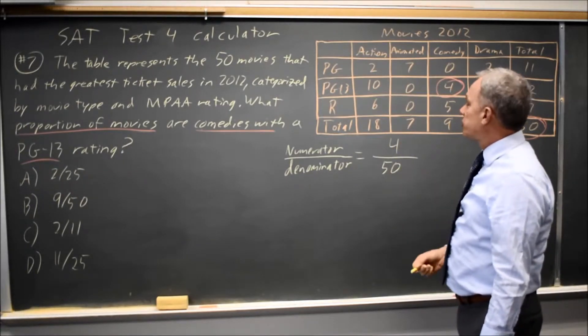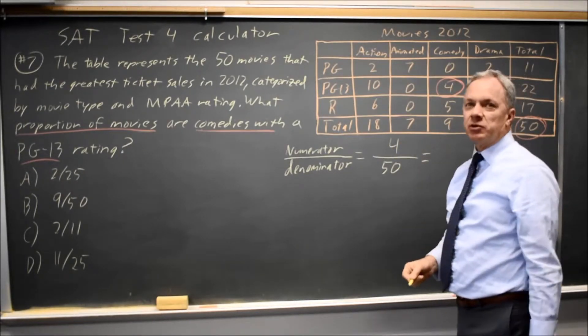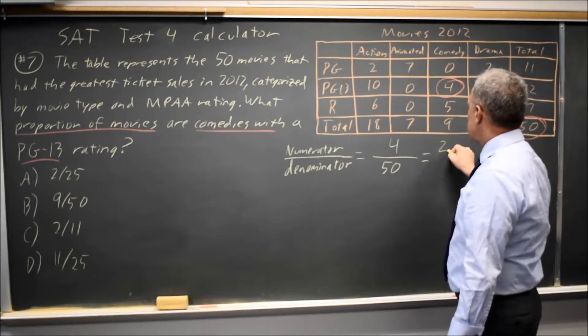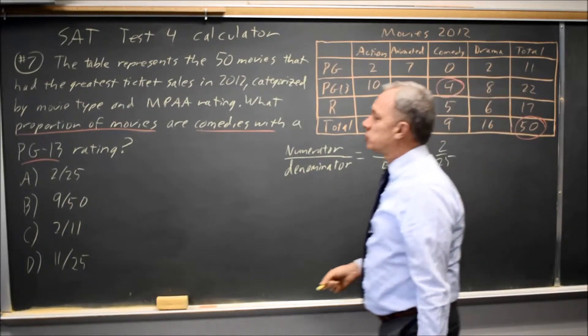So that would be four out of 50, which simplifies - this is a calculator question if you want the calculator to simplify your fraction - two over 25, choice A.